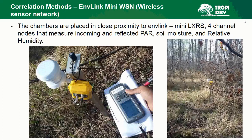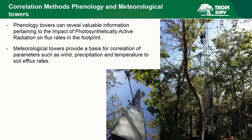The bottom left shows what the node looks like — it has four channels coming out of the face. The PAR sensor is located on top of the wooden stake, with the soil moisture sensors going into the ground on the bottom, as well as a white radiation shield that shields the relative humidity sensor. The right picture shows what the node looks like as a whole. Another method to correlate data is to use phenological towers, which can reveal valuable information pertaining to the impact of photosynthetically active radiation on flux rates. Meteorological towers provide a basis for correlation of parameters such as wind, precipitation, and temperature to soil efflux rates.